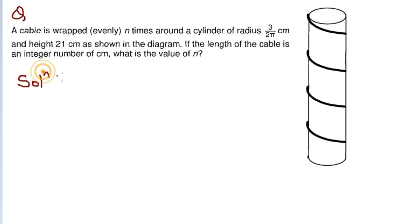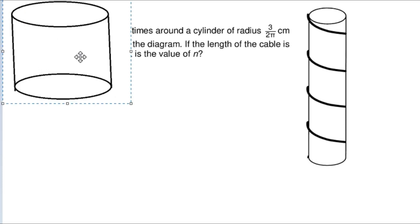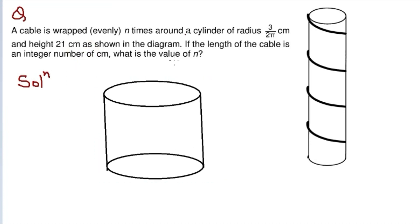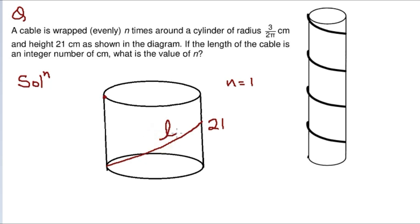This question is a little bit peculiar. To solve it, you need to understand it from the basics. If I consider a single turn — n equals 1 — what happens? Suppose I have this cylinder with height 21, and the rope is wrapped around it for one round. The length of the wire is taken as l.